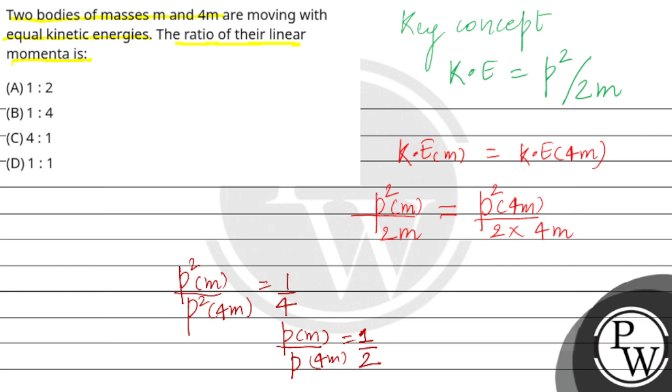So therefore, option A, 1 by 2 is the correct answer. Hope you all understood. Best of luck.